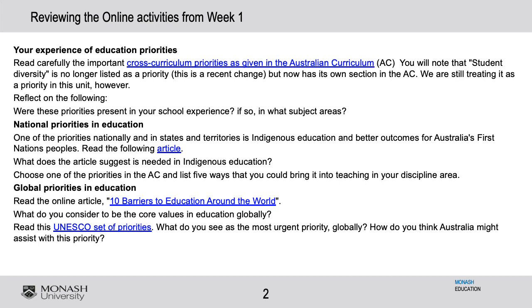There are also global priorities in education, and I ask you to look at some of these barriers to education around the world. One of the core values — one of the core barriers — is that every child has a right to an education, and in some countries that's not exactly happening, and even within Australia in some of the Indigenous communities this is not happening to the extent that it might. I also asked you to look at the UNESCO set of priorities and think about which ones are actually quite urgent and how they parallel some of the thinking in the Australian curriculum. This is really at the heart of what this whole unit is about.